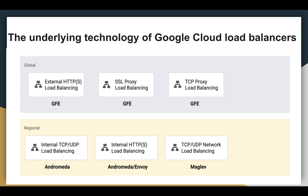What is internal TCP/UDP load balancing? It is built on the Andromeda network virtualization stack. Internal TCP/UDP load balancing enables you to load balance TCP/UDP traffic behind an internal load balancing IP address that is accessible only to your internal virtual machine instances. The internal load balancing IP address is configured to act as the front-end to your internal backend instances, using only internal IP addresses. It supports regional managed instance groups so that you can autoscale across your region, protecting your service from zonal failures.